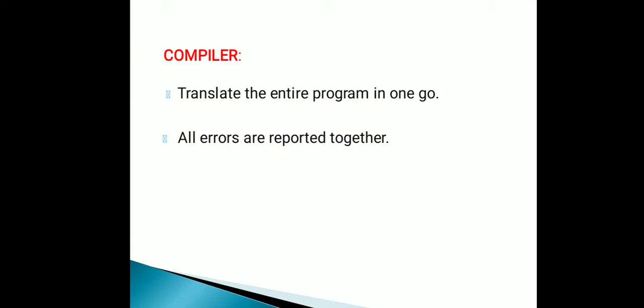Next is the compiler. Unlike the interpreter which checks line by line, the compiler translates the entire program in one go. All errors are reported together, so the developer can see all errors at once along with their line numbers for debugging. After all errors are removed, the program can be recompiled to obtain the object program.